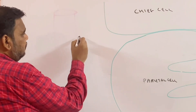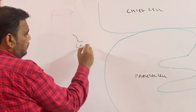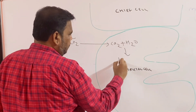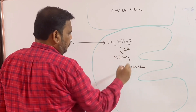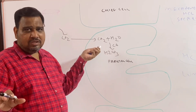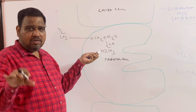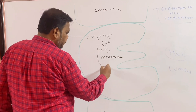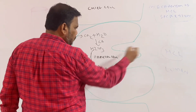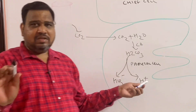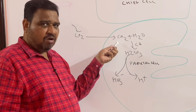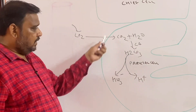Carbon dioxide comes from the blood vessel into the parietal cell, and carbon dioxide combines with water to form carbonic acid. Carbonic acid is formed in the parietal cell — that is the first step. So carbon dioxide enters from the blood vessel, combines with water to form carbonic acid (H2CO3), which is then divided into H+ and bicarbonate. This H+ has to come to the gastric lumen. H+ is a product of carbonic acid, which is formed by combination of carbon dioxide with water from the blood vessel.